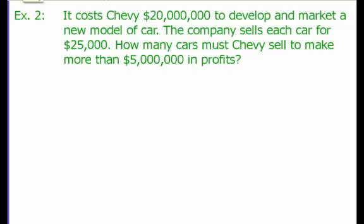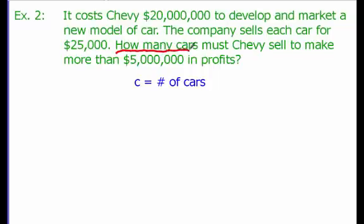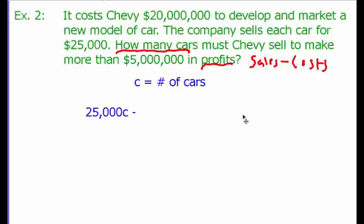Example 2: It costs Chevy $20 million to develop and market a new model of car, and they sell each car for $25,000. We want to know how many cars Chevy needs to sell to make more than $5 million in profits. We define C as the number of cars. Profits are always sales minus costs. Sales can be written as $25,000C, since each car sold generates $25,000.